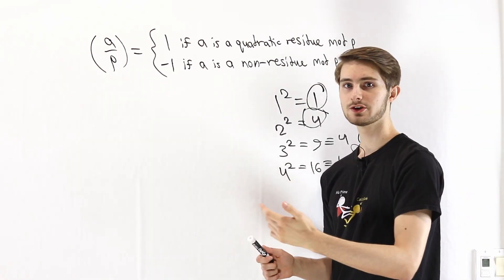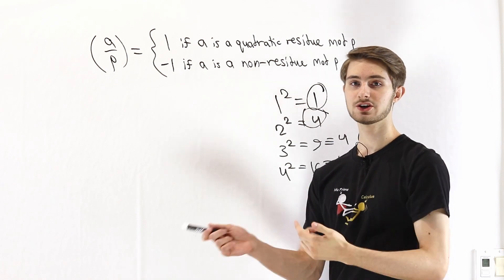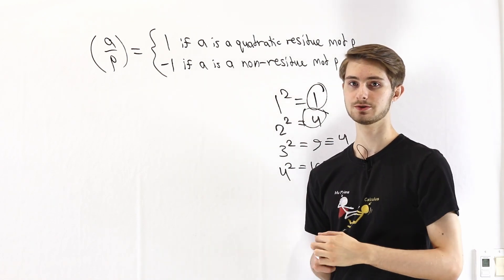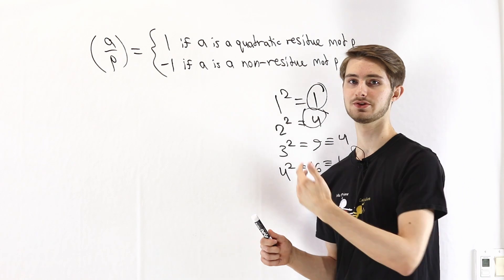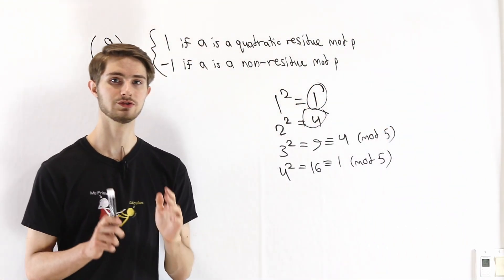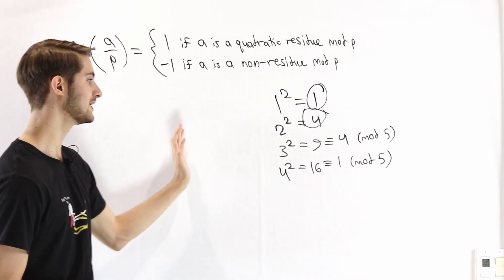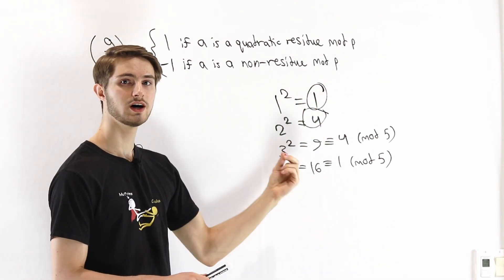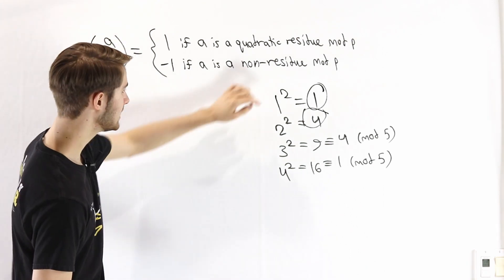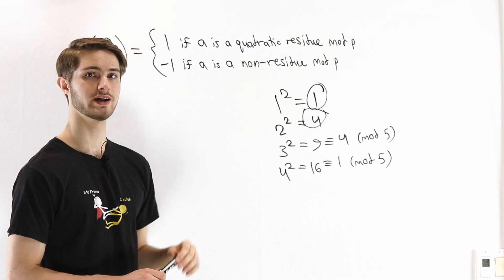If you're wondering why the possible values are 1 and negative 1 instead of 1 and 0, it's because we often want to multiply Legendre symbols, which is easier if none of the outputs is equal to 0. Now let's look at an example with the quadratic residues mod 5. If we take all the numbers mod 5 except 0 and square them, the two possible results that we can get mod 5 are 1 and 4. That means that 1 and 4 are quadratic residues.